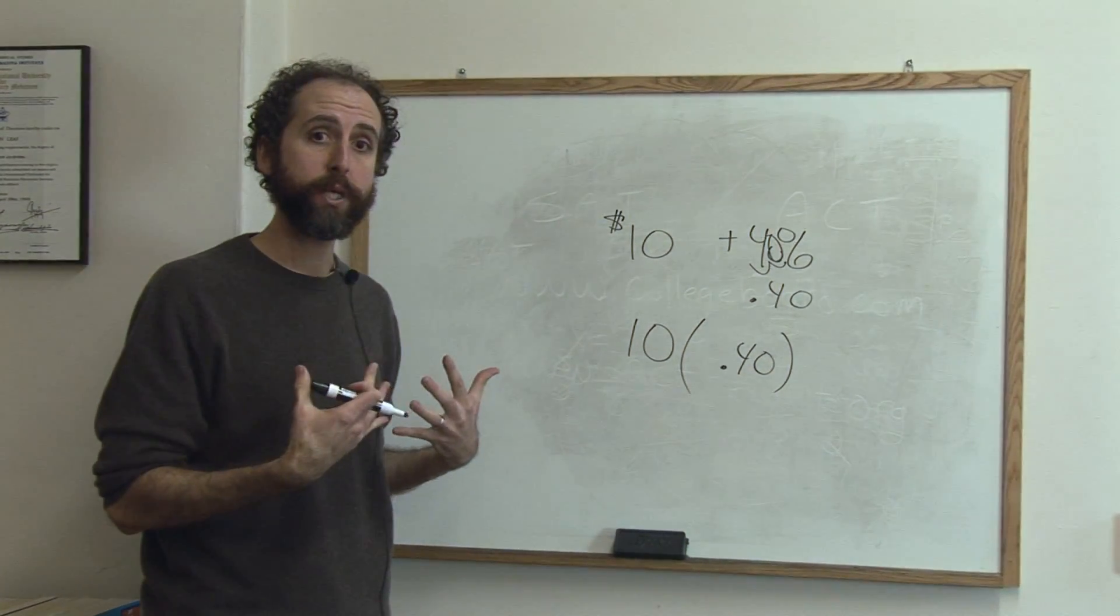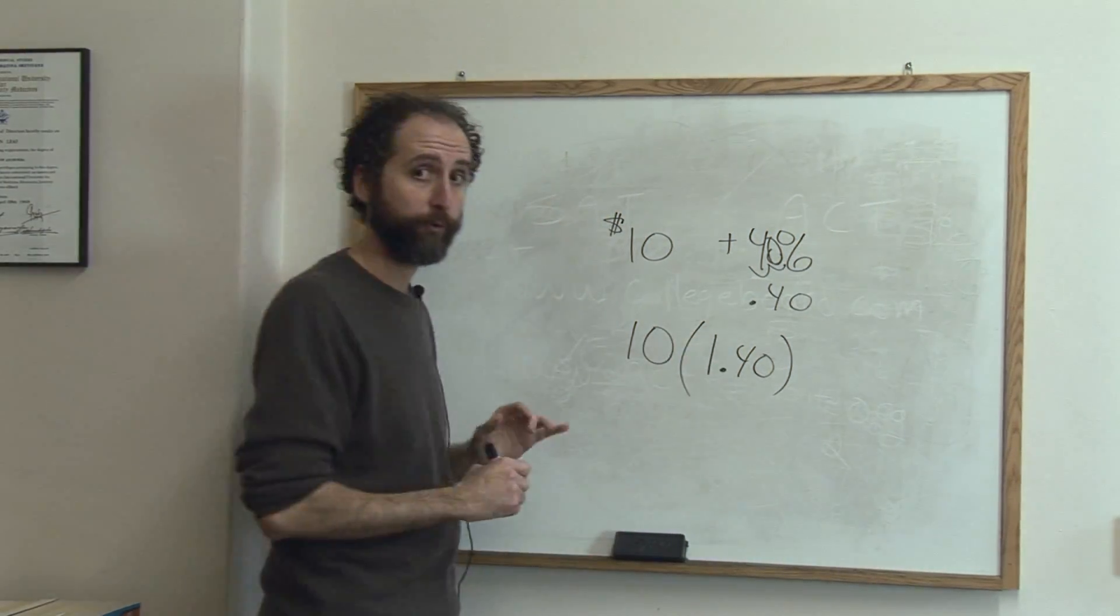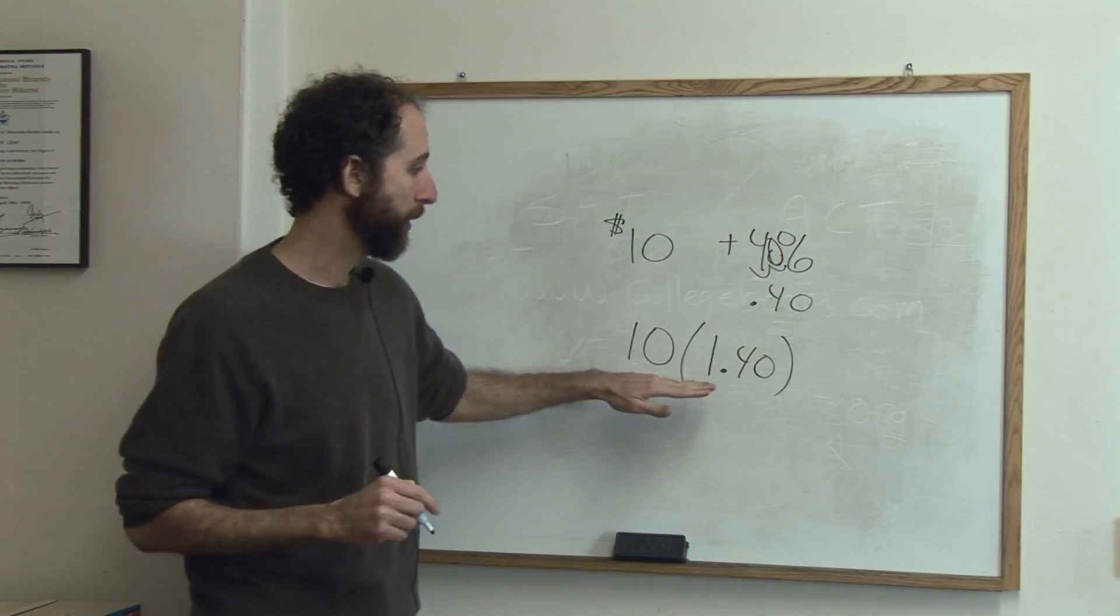But if you want to do it all in one step, you do 10 times 1.40. That's called a markup percentage.